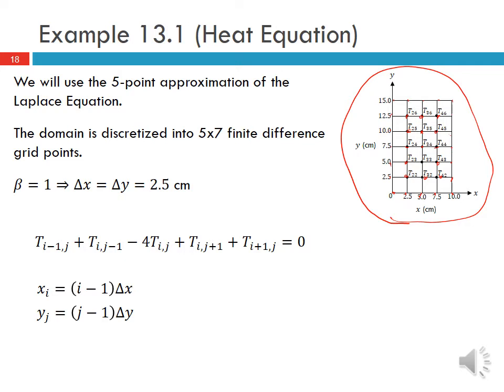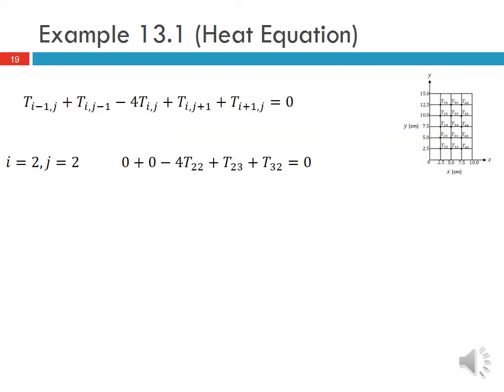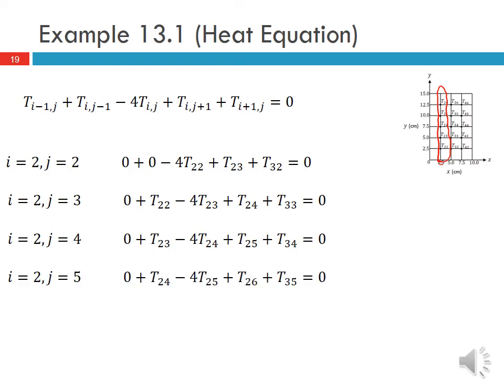With the five-point approximation of the Laplace equation and delta x = delta y, beta = 1, our grid points are x_i = (i-1)*delta x and y_j = (j-1)*delta y. We can write the FDE for each interior point. Holding i constant and writing the equation for all j values: for i=2, we write equations for j=2, 3, 4, 5, and j=6, which reaches the top boundary.